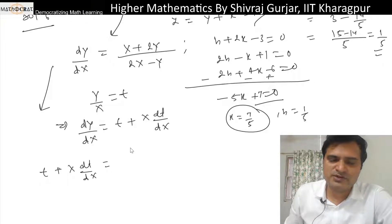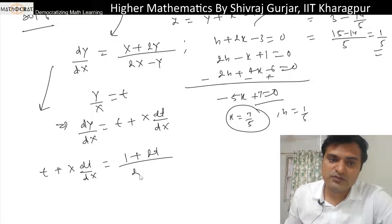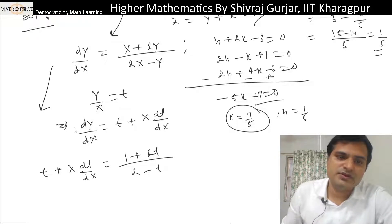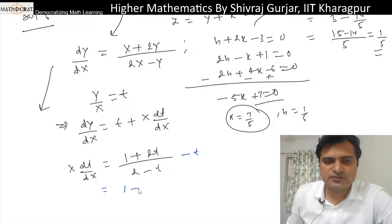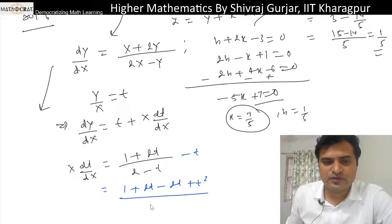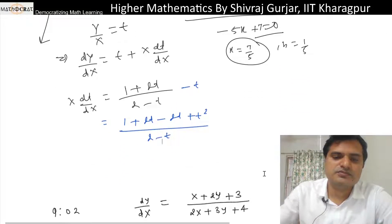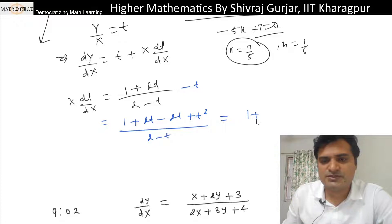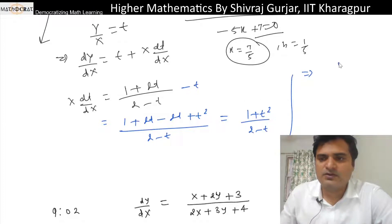So X·dT/dX = (1 + 2T)/(2 - T) - T = [1 + 2T - 2T + T²] / (2 - T). Wait — that becomes 1 + T² divided by (2 - T). So we can say (2 - T)/(1 + T²) dT = dX/X.